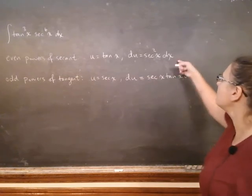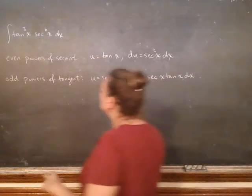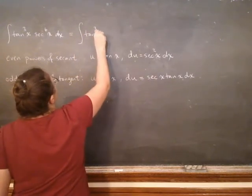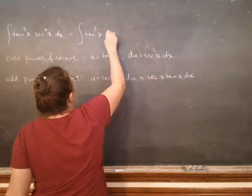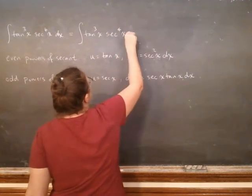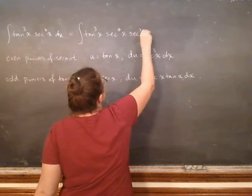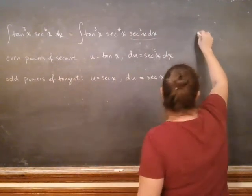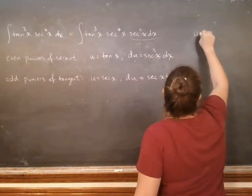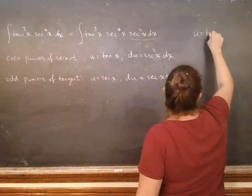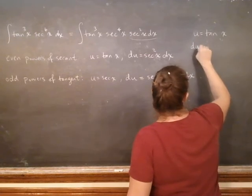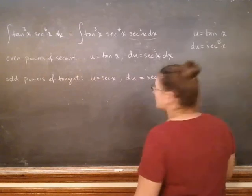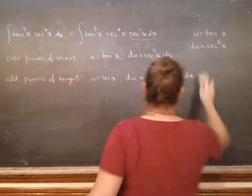We're going to pull off the secant squared to be my du. That's going to leave me with secant to the fourth, and then my du is secant squared. u was going to be tangent, and then du, we're going to use secant squared.